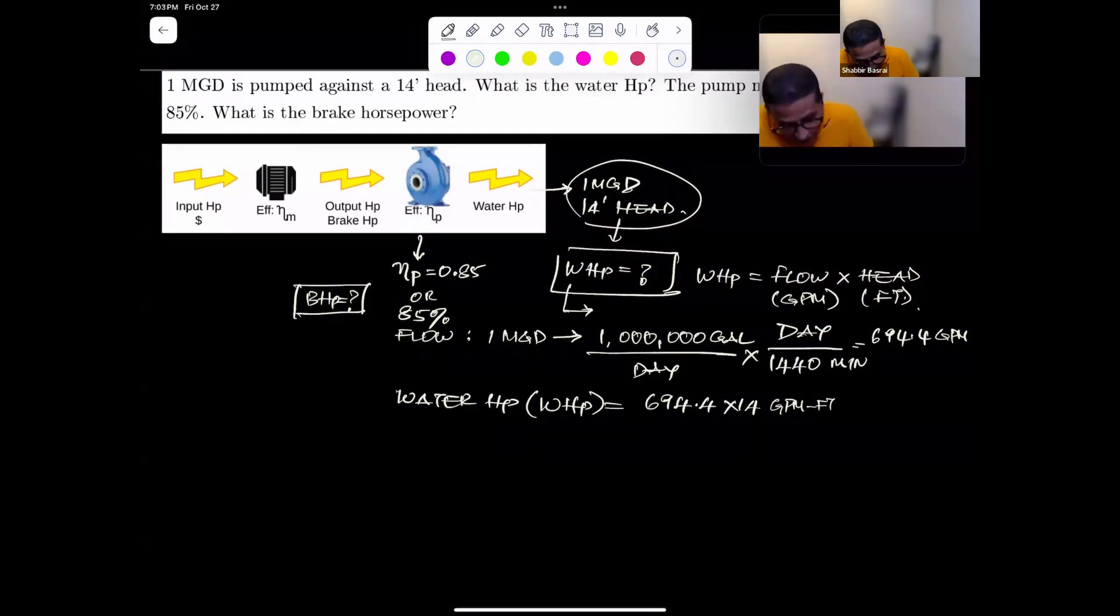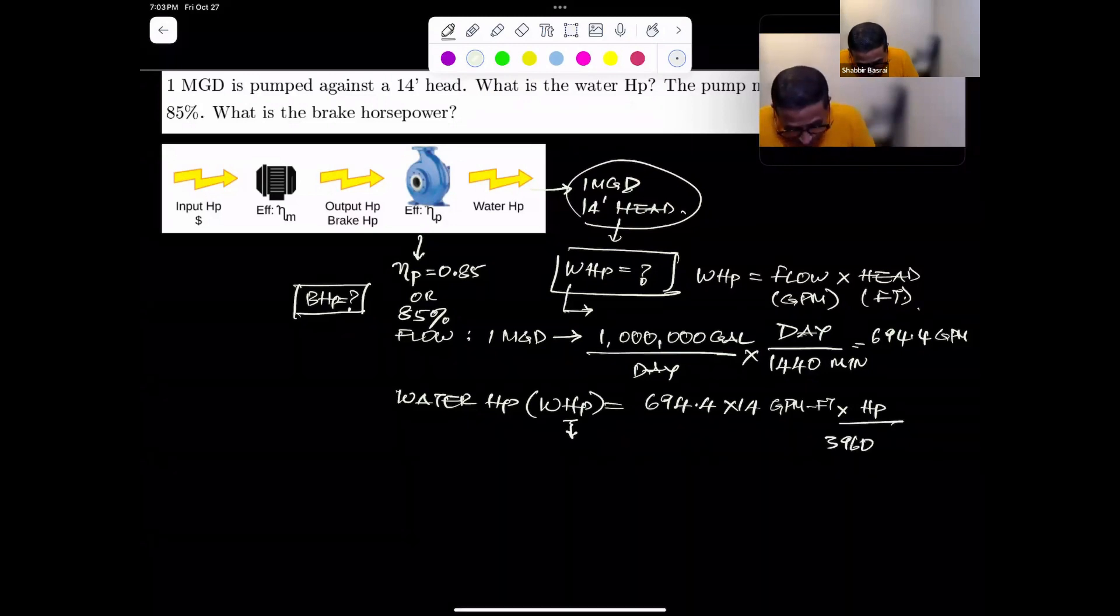You need to convert this. Because you are looking for unit in horsepower, you need to do the conversion. We know that per horsepower, you have 3960 GPM foot. This gives you a water horsepower of 2.46.